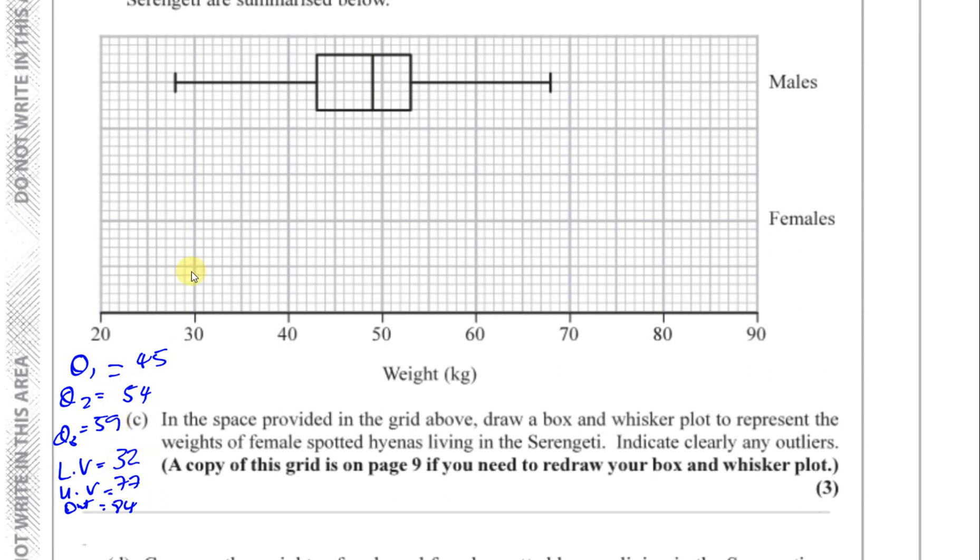So what we can do here is we can draw another diagram, but we've got to start from the lowest value, which is 32. So 32, let's start from here. 32 is, that's 32 over here. So that's the lower value. And then we've got the lower quartile, which is 45. So lower quartile is over here. So let's see, they've done three squares. Let's do three squares as well.